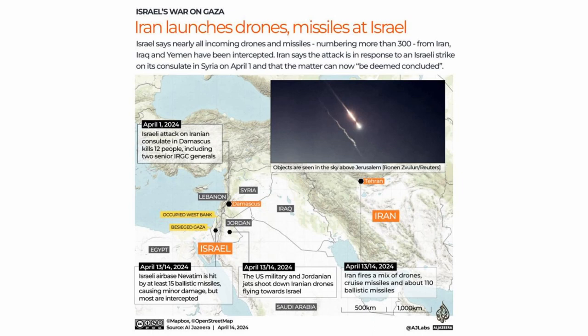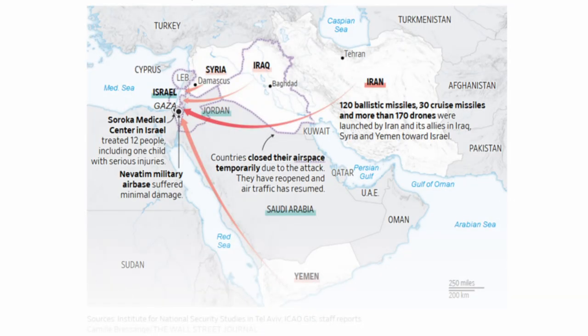In this map, we can see that Iran fired missiles and drones from Syria, Iraq, and Lebanon, as well as Iran itself. Allied forces also fired at Israel from Lebanon. While the shortest distance from Iran to Israel is about 620 miles, the missiles were fired from Iraq, Syria, and Yemen.